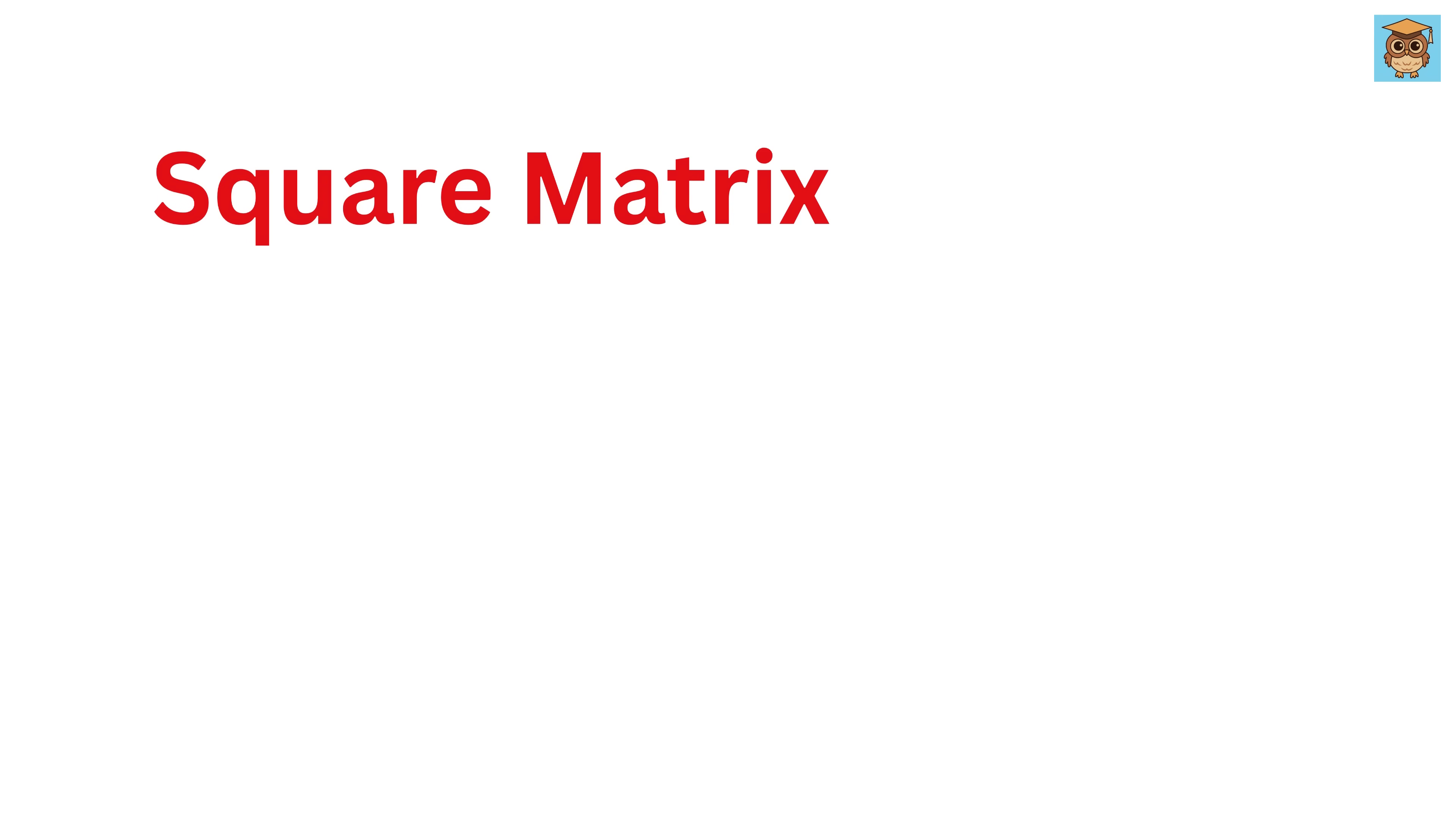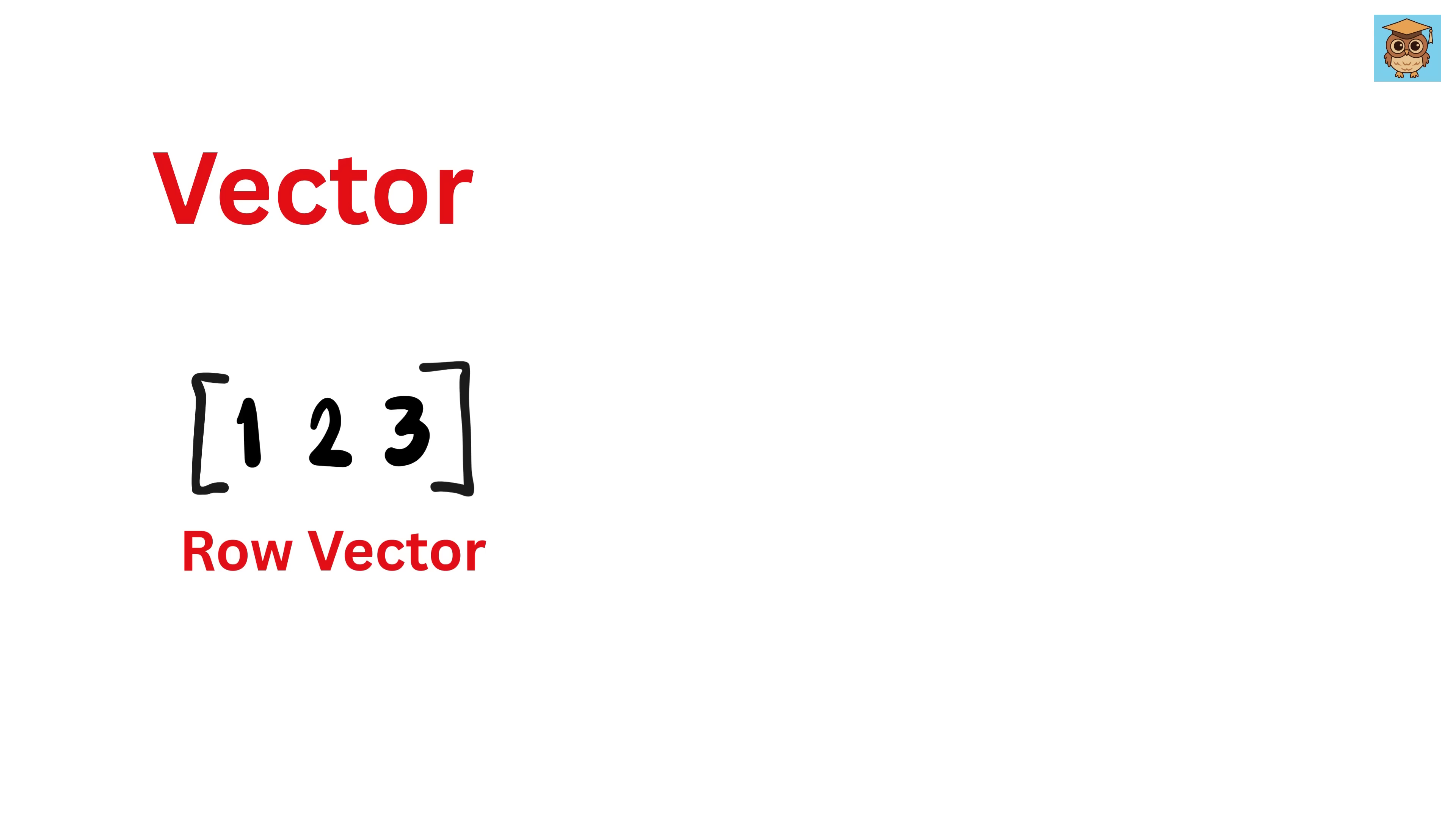Now, there is another special type of matrix called a vector. If a matrix has just one row, it is called a row vector. If it has just one column, it is called a column vector.